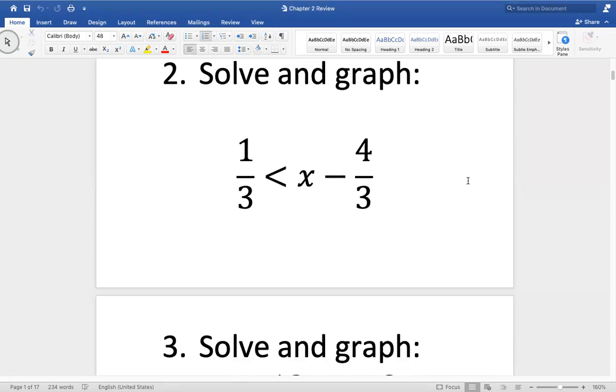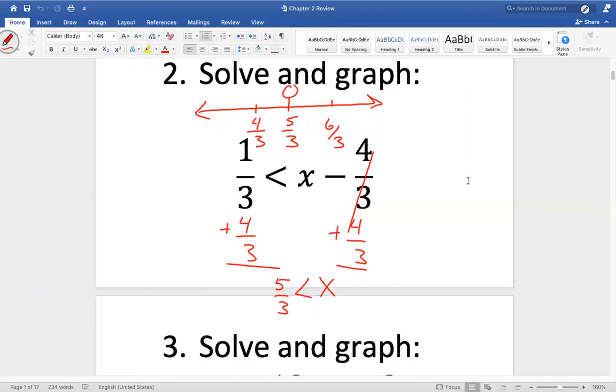Solving and graph. First thing you want to do is add four thirds to both sides. These cancel. X is left on the right. On the left, one third plus four thirds is five thirds. So to graph it, five thirds goes in the middle. Six thirds to the right or two, and four thirds to the left. It's an open circle. We're eating the X, so we shade to the right. Not bad so far. Pretty easy. And remember, some of this is going to be multiple choice. You can look for the open and closed circles and eliminate those.